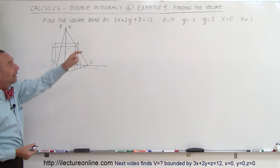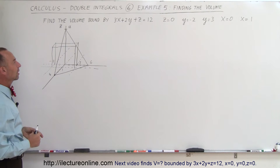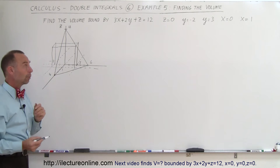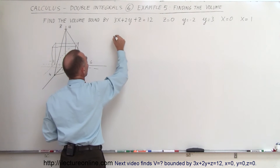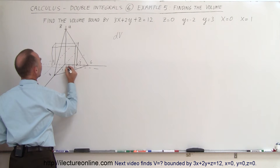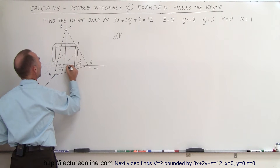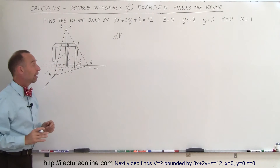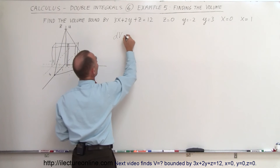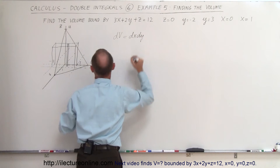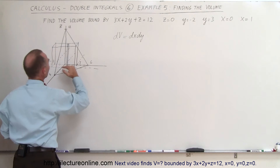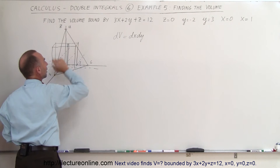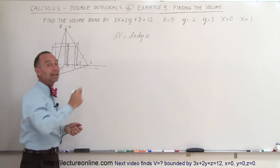We're finding the volume bounded by the plane and z equals 0, y equals negative 2, y equals 3, x equals 0, and x equals 1. To do that, we need to find DV, a small volume element. We take a small DX times DY and bring that all the way up to the top, giving a small rectangular box section representing DV.